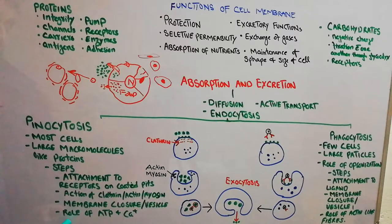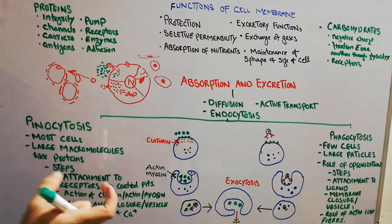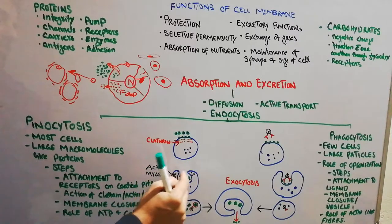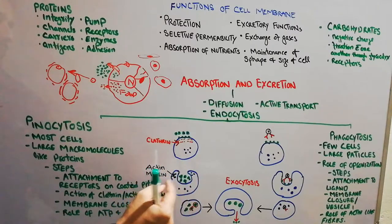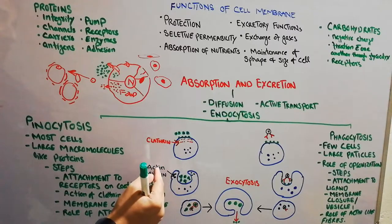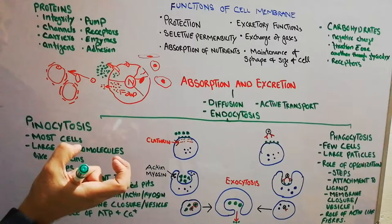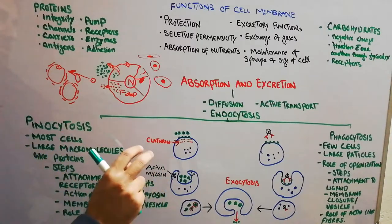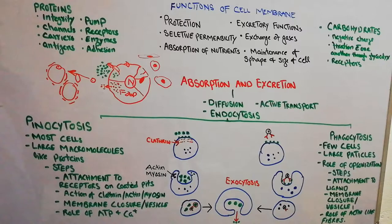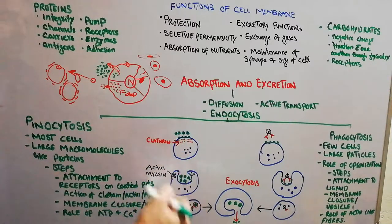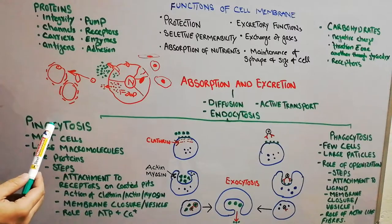It is important to remember that there is a role of ATP, which is the substance that provides energy to the cell, and calcium, which is responsible for contraction of fibers. Actin and myosin proteins — also present in abundance in muscles — along with calcium and ATP, assist in engulfing the macromolecule and closing the membrane around it. This process is pinocytosis, and it occurs in the human body.